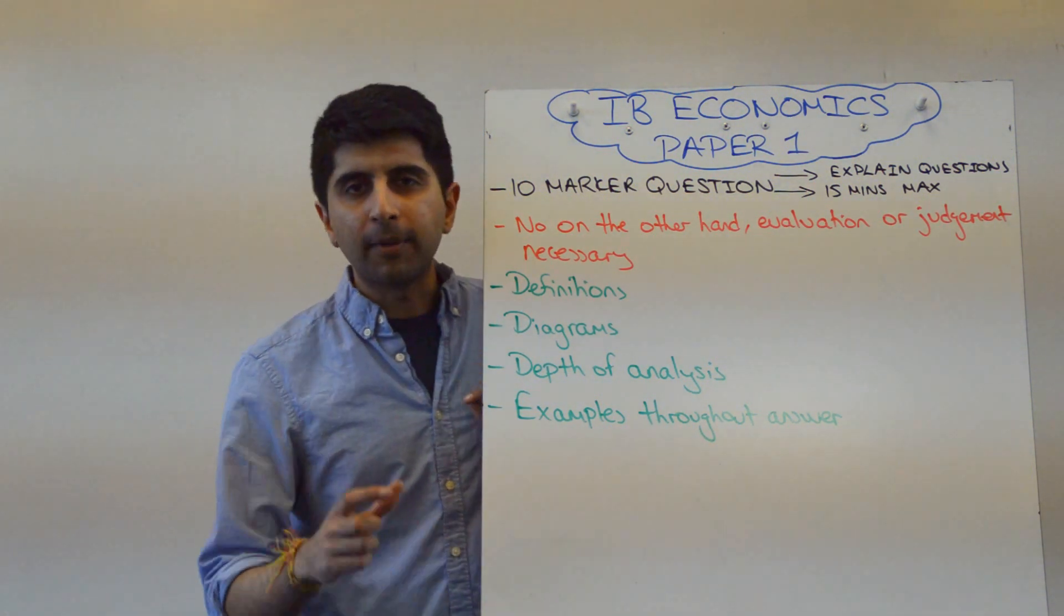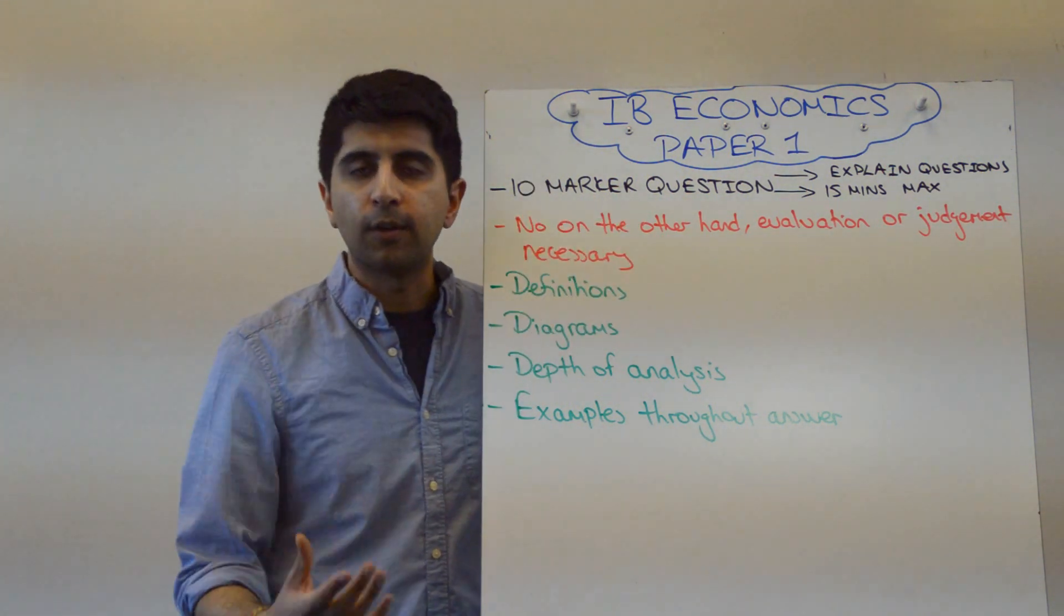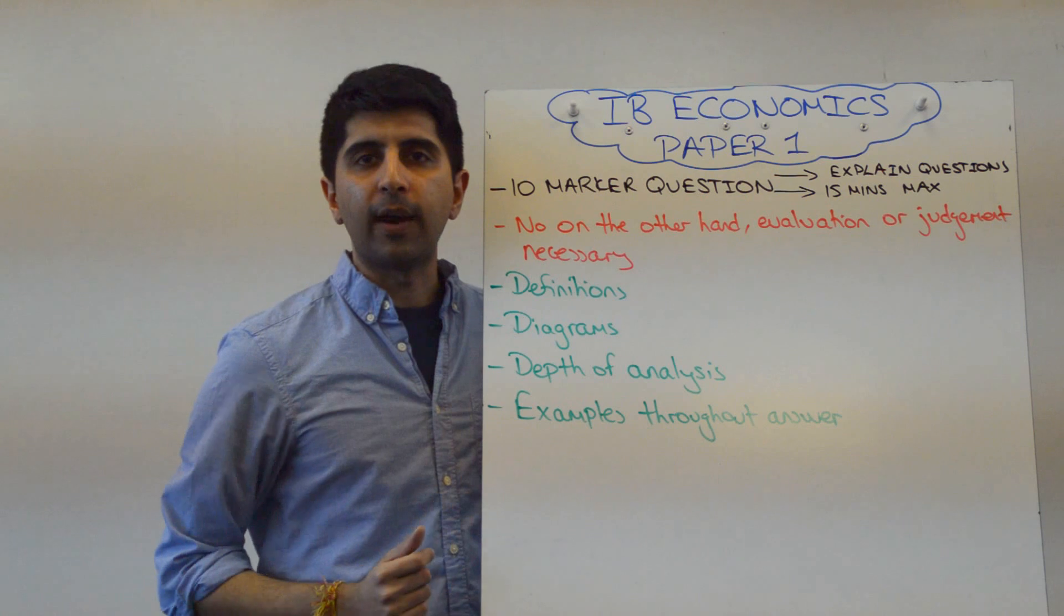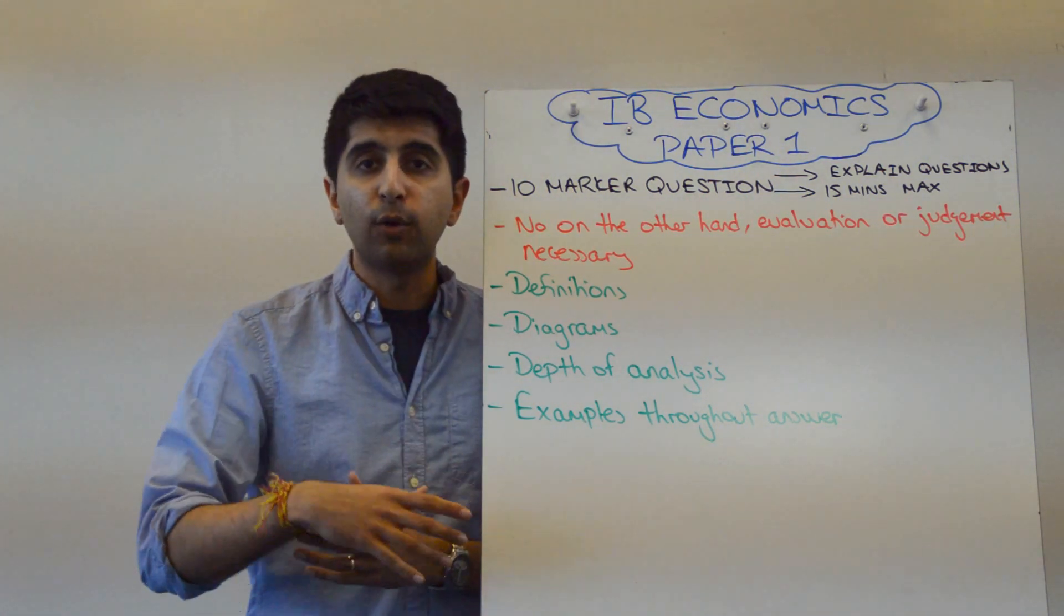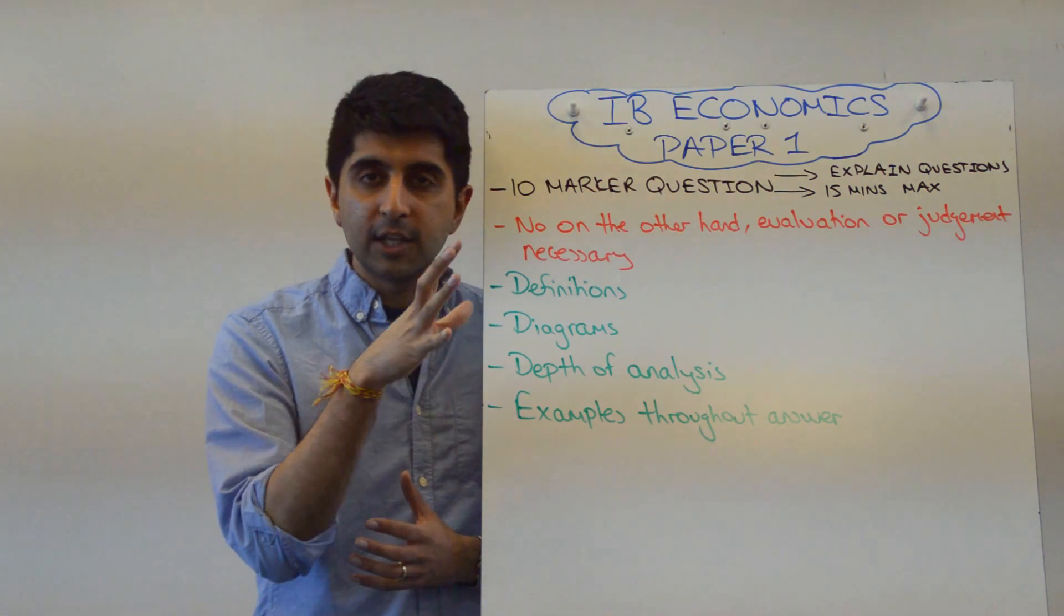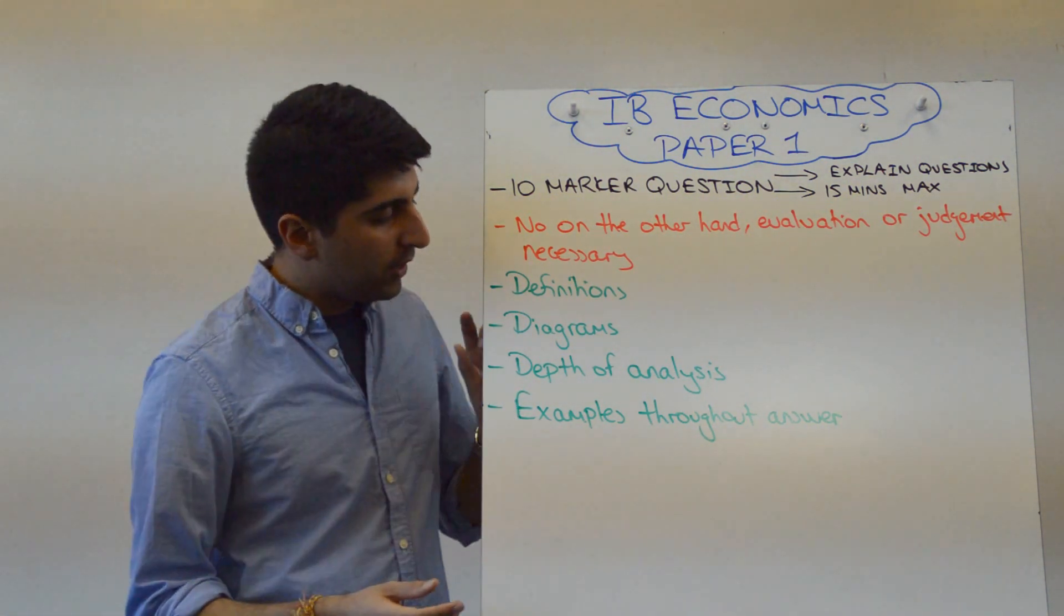Also with your diagrams, IB like it if you can apply on your diagram. So instead of just price and quantity, micro, you say, look, price of cigarettes, quantity of cigarettes. You apply if you know the market or if you can work out a market to apply to. IB examiners really like that.